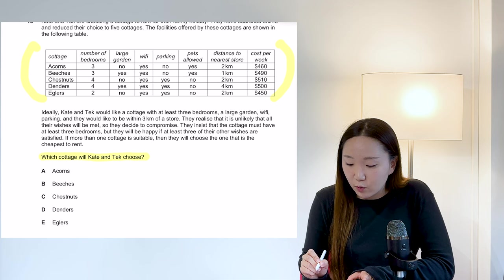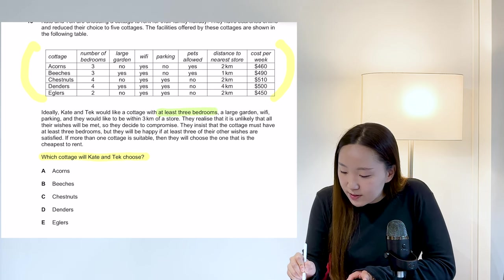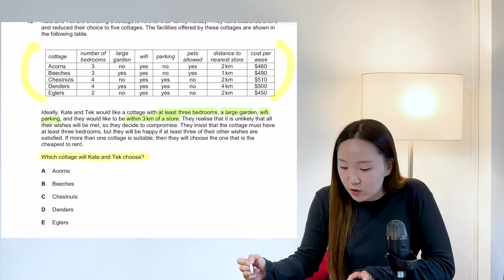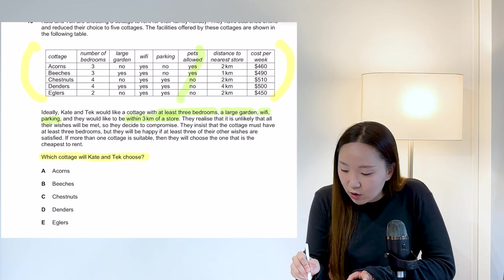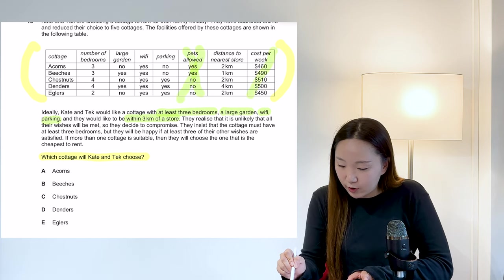So first of all, go through and look at what all the different requirements are. So Kate and Tech, they want at least three bedrooms, a large garden, Wi-Fi, parking within three kilometres of a storm. So we're not looking at this column, basically. So we're looking at, and they haven't, we're not looking at these two columns.